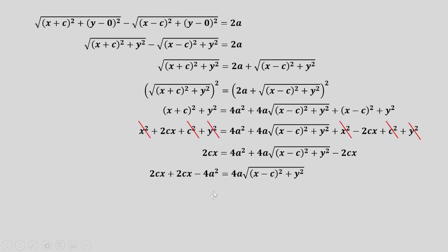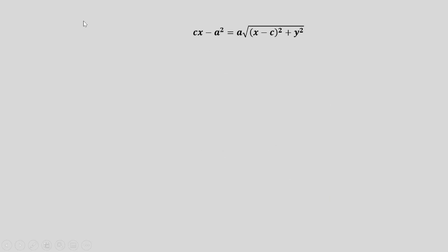Rearranging the terms gives us this one. Simplifying 2CX plus 2CX gives us 4CX. Dividing all the terms by 4 gives us this equation. To continue, let us square both sides of the equation to remove the square root on the right side, and performing square of a binomial for the left side gives us this equation.